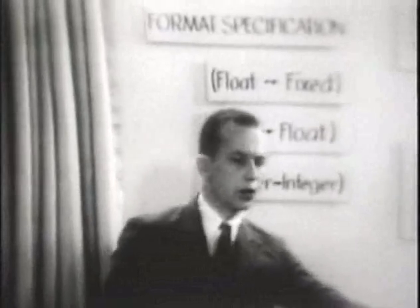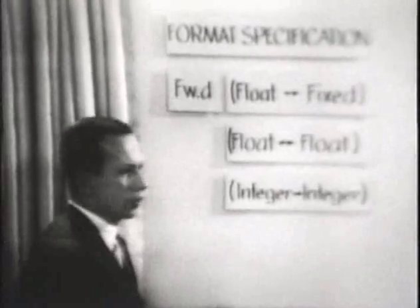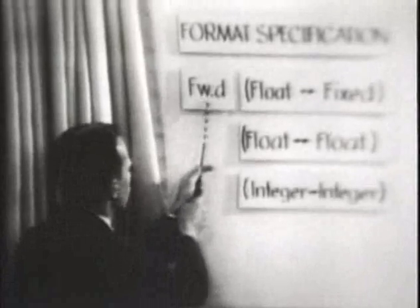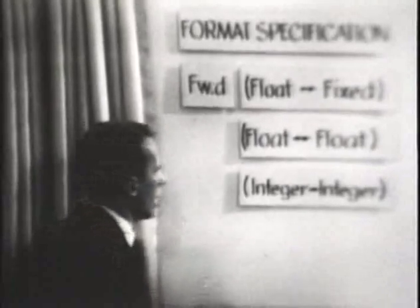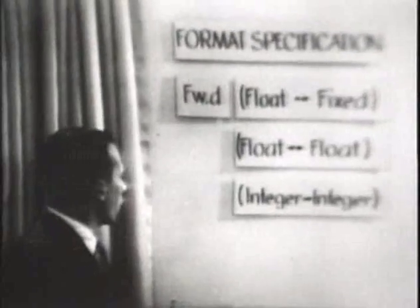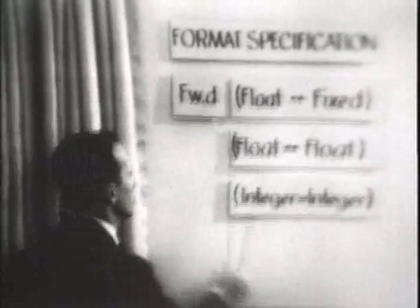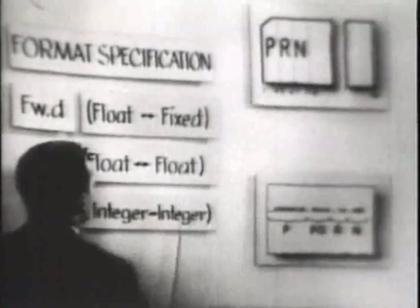In the FORTRAN language, we would specify that fixed point or floating point would be specified by the letter F. The value W represents the total width of our field — such as in our card format here, the principal being four columns wide: one, two, three, and four. The letter W would specify four. The letter D represents the number of decimal places which exist in this quantity. For the value of P, this would be two decimal places.